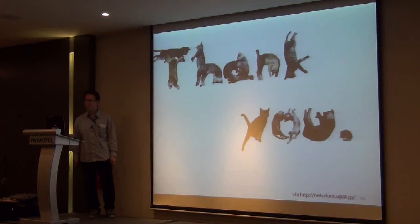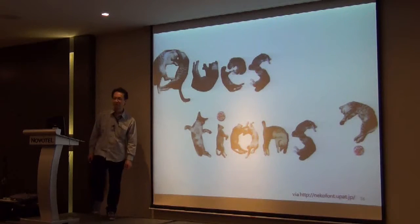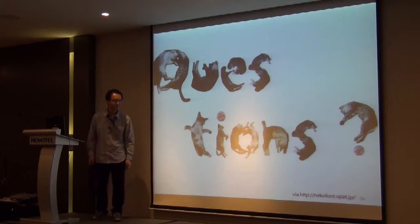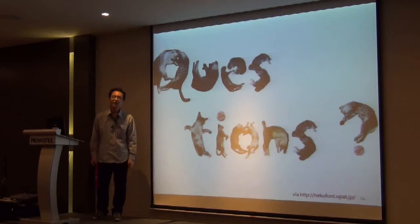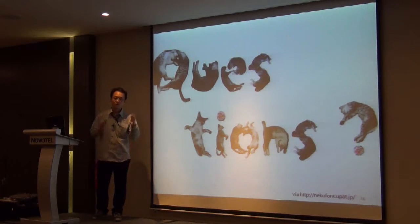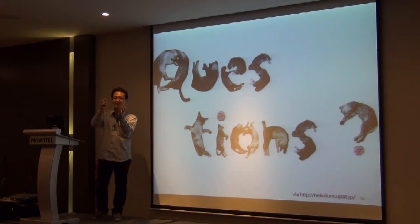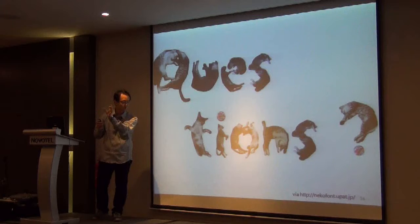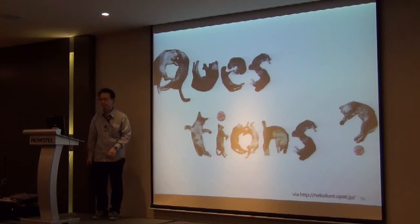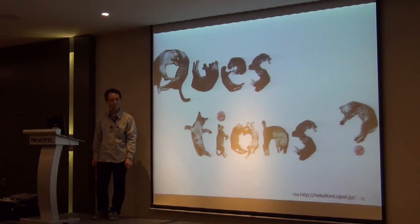Thank you very much. Any questions or comments? — Is it possible to define some general properties of the tweaking methods for CMAC? — Yes, it may be possible. We would first define which class of tweaking methods are flawed, and then define what property is required for the masking values within those classes. It is probably possible. — Any other questions? — If not, let's thank the speaker again.